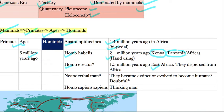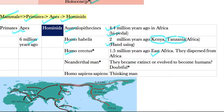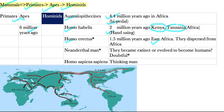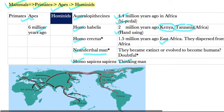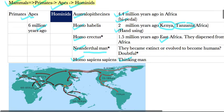Then came Homo erectus, around 1.5 million years ago in East Africa. These were the hominids which dispersed from Africa to different continents. After Homo erectus came the Neanderthal man — there is a debate: some say they were a different species that became extinct, while others say modern humans evolved from Neanderthal man. Finally, the last one is Homo sapiens sapiens, the 'thinking man,' which are present-day human beings.